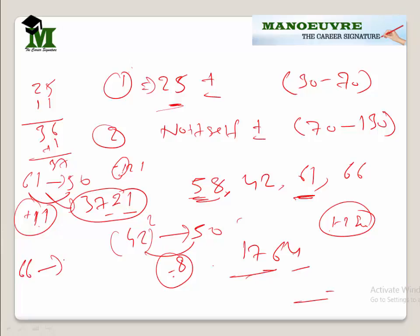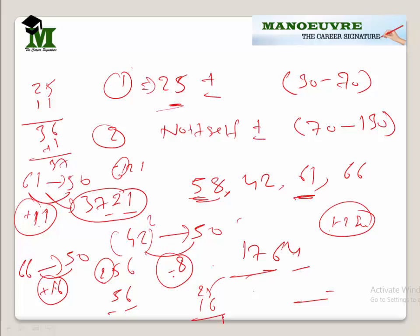Let's find one more: 66. Comparing 66 to 50 — it is 16 more. 16 squared is 256, so I write 56 as it is and 2 is my carry. I add 16 to 25: 25 plus 16 is 41, plus 2 carry gives 43. So 4356 is the answer for 66 squared.